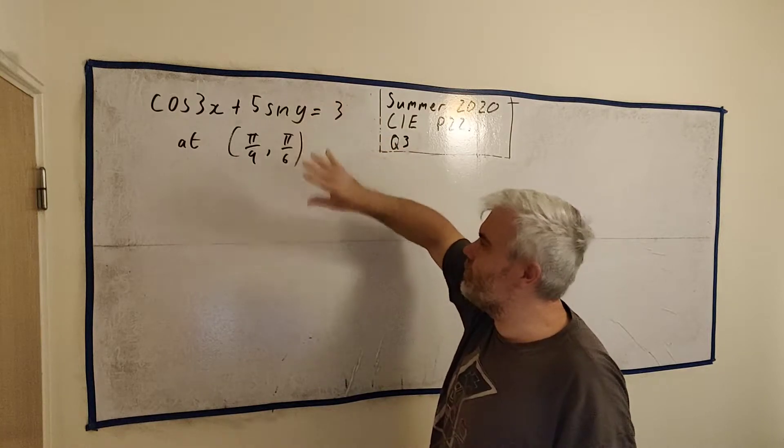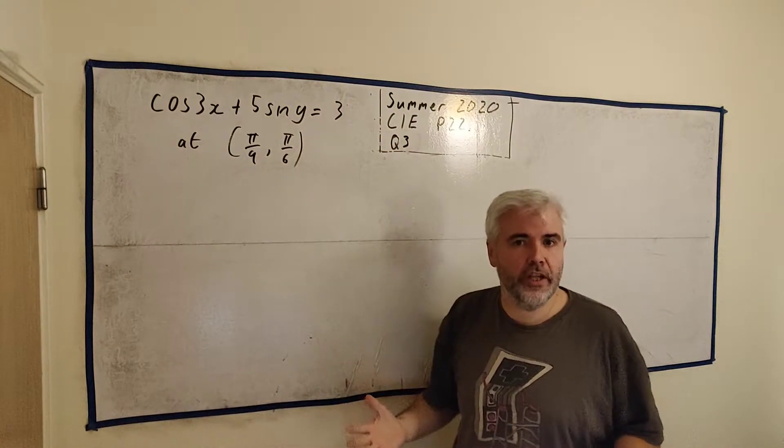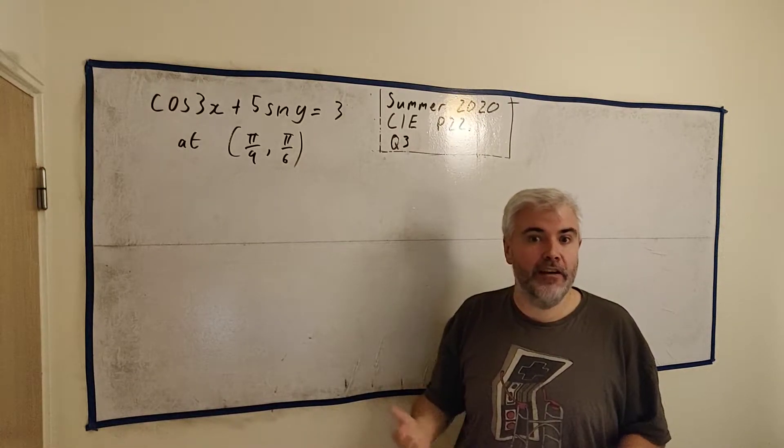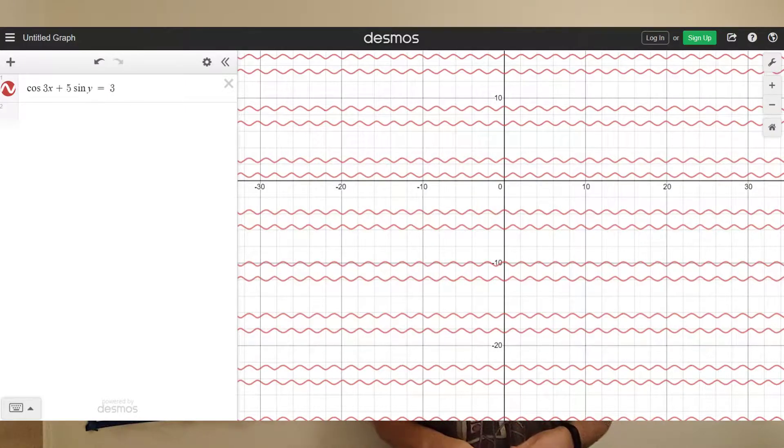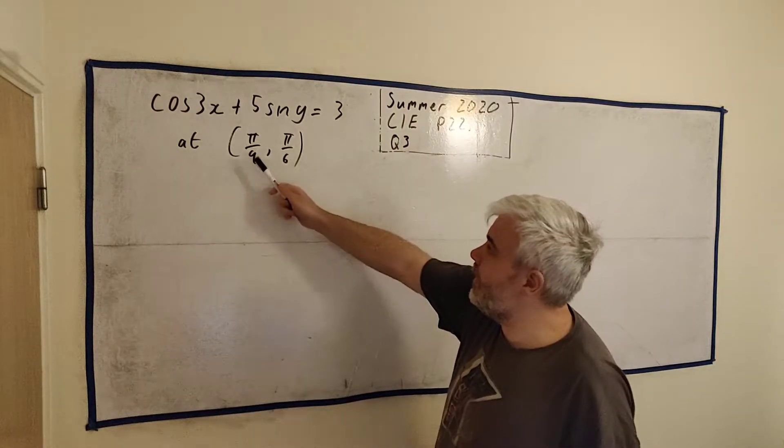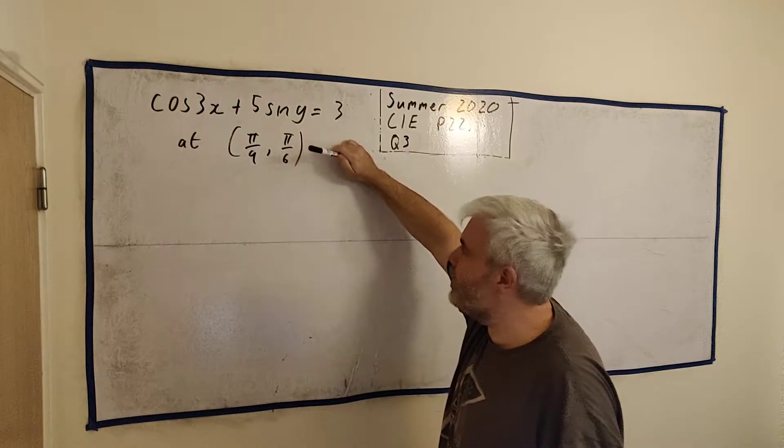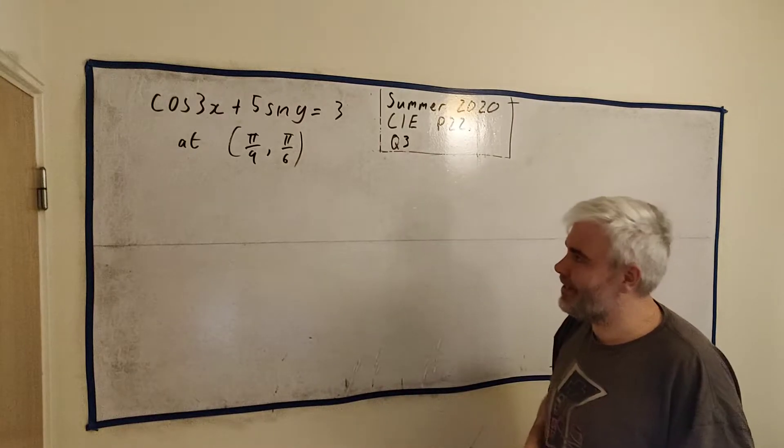Now, you're not going to be able to draw this curve yourself, but you can if you have access to a graphing website or calculator. I'll pop that onto the screen right now. As you can see, there's lots of waves, and they've given us a distinct point. We want to find the gradient at that point, which is pi over 9 for the x part, and pi over 6 for the y part. You don't need that picture, I just thought it's interesting to see it.